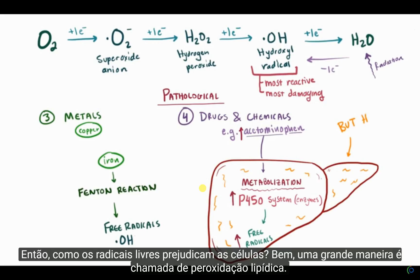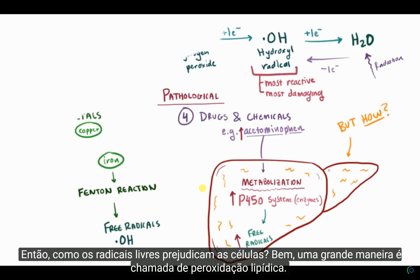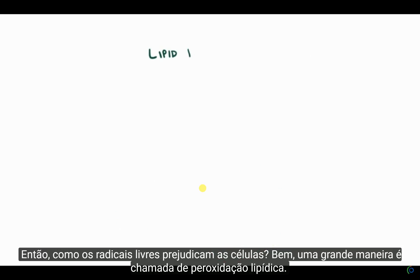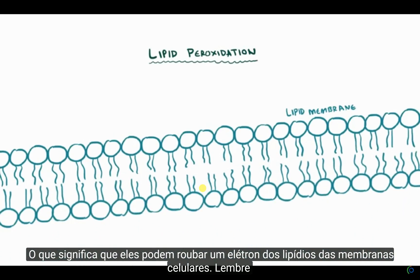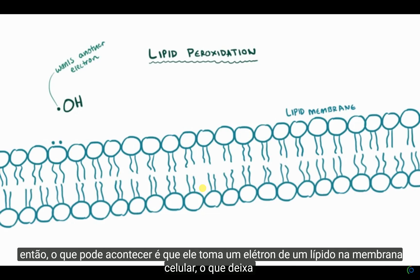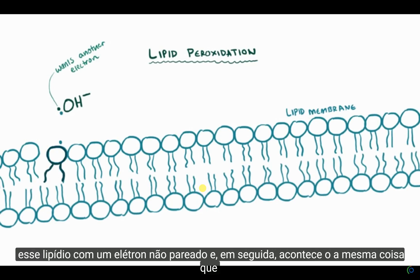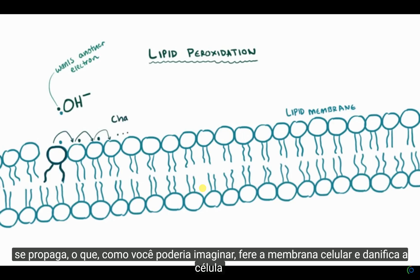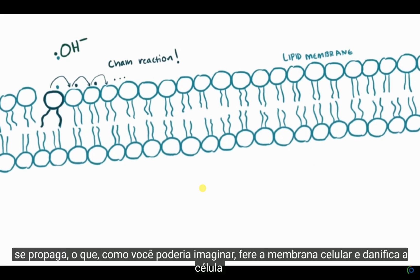So how do free radicals actually damage the cell? One big way is called lipid peroxidation, meaning they can steal an electron from the lipids of cell membranes. Remember that they have this unpaired electron, so they want another electron to pair with. What can happen is the free radical takes an electron from a lipid in the cell membrane, which leaves that lipid with an unpaired electron itself. Then that lipid can do the same thing to another lipid, propagating this process in a chain reaction — which can hurt the cell membrane and damage the cell as a whole.